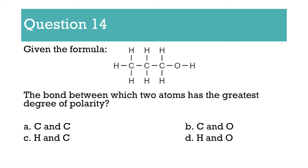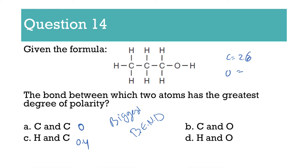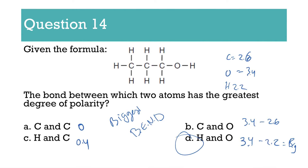Number 14: which two atoms have the greatest degree of polarity — meaning which one has the biggest bond electronegativity difference? C and C is zero, C and H is 0.4. Carbon is 2.6, O is 3.4, and H is 2.2. So 3.4 minus 2.2 gives the bigger number, so that's why it is D. The bigger the difference, the more polar a bond is, the greater degree of polarity there is.